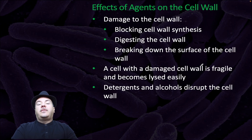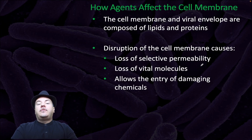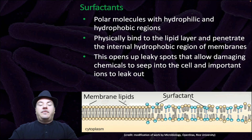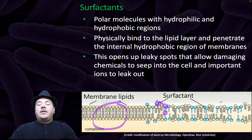How agents affect the cell membrane: the cell membrane and viral envelope are composed of lipids and proteins. Disruption of the cell membrane causes loss of selective permeability, loss of vital molecules, and allows the entry of damaging chemicals. Surfactants are polar molecules with hydrophilic and hydrophobic regions. They physically bind to the lipid layer and penetrate the internal hydrophobic region of membranes, opening up leaky spots that allow damaging chemicals to seep in and important ions to leak out. The membrane is typically a phospholipid bilayer; when surfactants are added, they integrate into the membrane, creating openings where substances can get into or out of the cell.